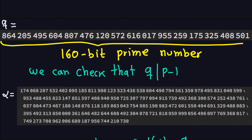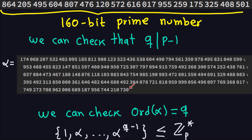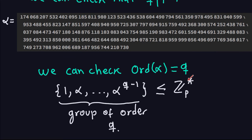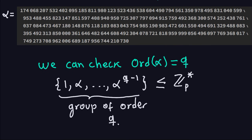Alpha is the generator of the subgroup of Z_p* of size Q — it's also a large number, and not a prime since it ends in zero. It satisfies: Alpha to the Q modulo P equals one, and all powers from 1 up to Alpha to the Q minus one are distinct. There are Q elements in this subgroup, all living in Z_p*.